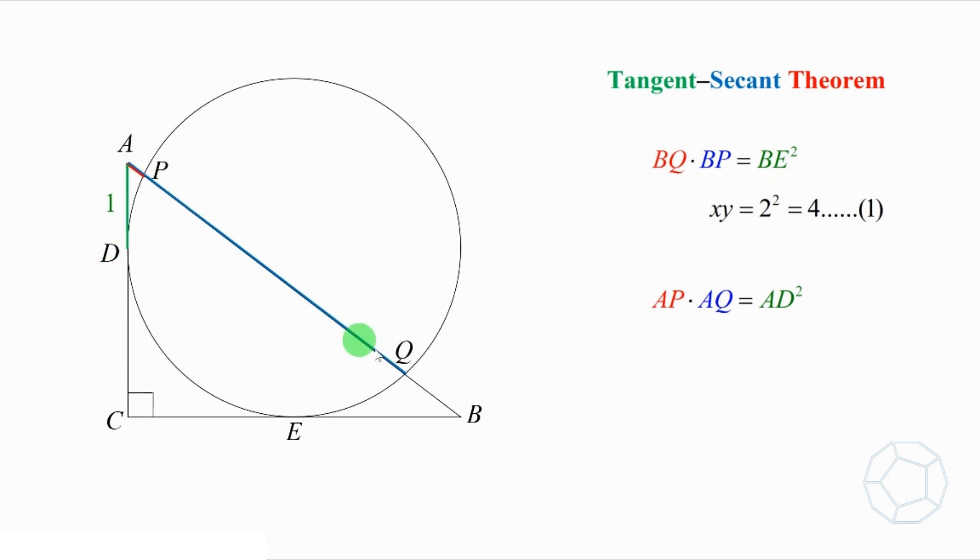Let's check out the lengths of AQ and AP. Bear in mind that the hypotenuse AB is 5. From the figure, AP is equal to 5 minus X and AQ is equal to 5 minus Y. Put them into the equation. We have 5 minus X times 5 minus Y is equal to 1 squared. Expand the left-hand side. Then 25 minus 5 times bracket X plus Y plus XY is equal to 1. Let's call this equation 2.